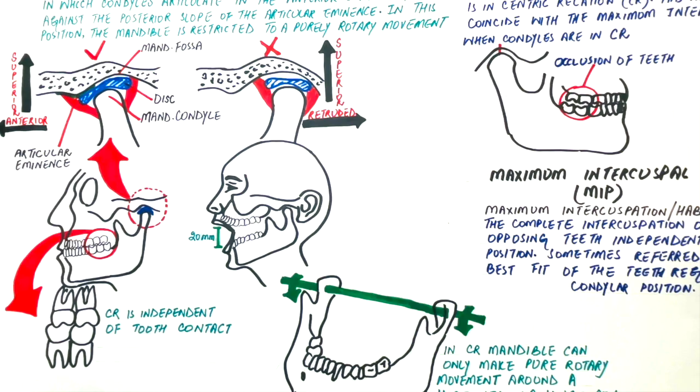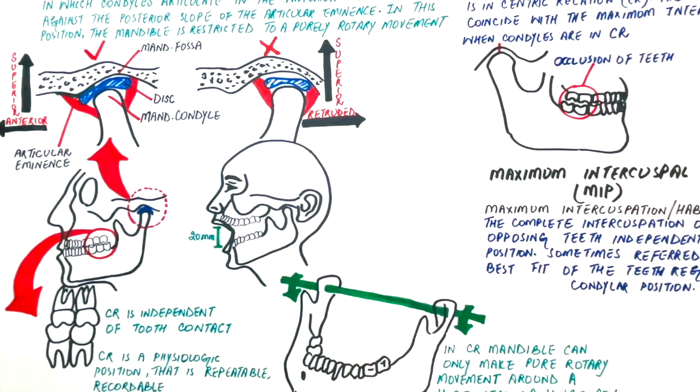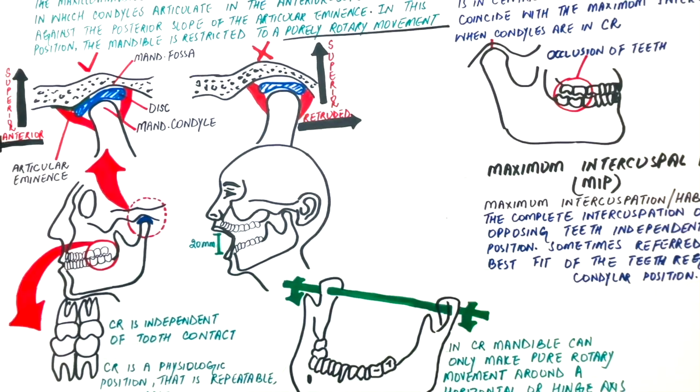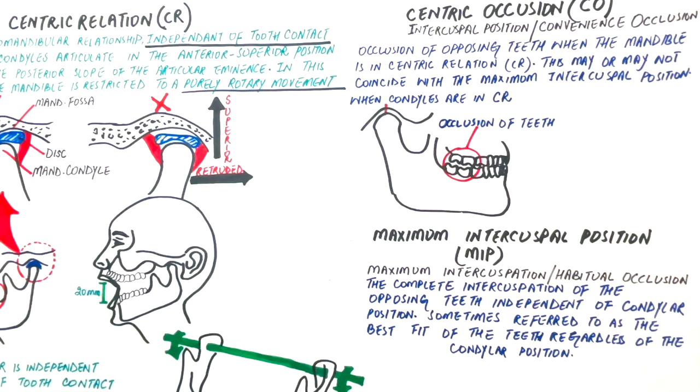Let's recap all that we have studied so far. Centric relation is a clinically determined relationship of the maxilla to the mandible, or a bone-to-bone relationship, and is independent of tooth contact. It's a physiologic position that's repeatable and recordable. Centric occlusion, on the other hand, is a teeth-to-teeth relation when condyles are in centric relation. That is, it takes centric relation as reference.